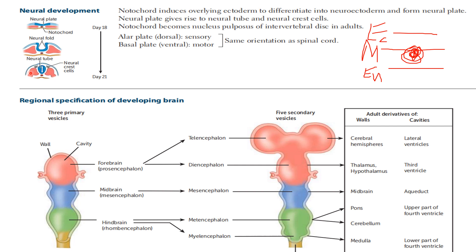The lateral wall of the neural tube is divided into the alar plate and the basal plate. The alar plate is dorsal and the basal plate is ventral. In the spinal cord orientation, the upper horn is sensory — that's the alar plate — and the lower one is motor — that's the basal plate.